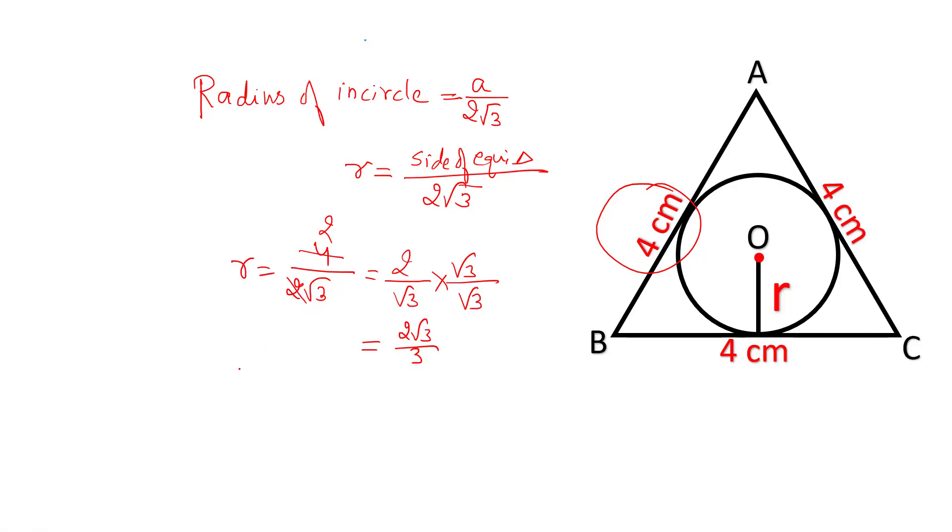Now, if you want to find out the area of this circle, then that will be equal to pi r square. Write pi as it is. The radius is a upon 2 by root 3, so the answer will be 4 by 3, or 4 pi by 3.